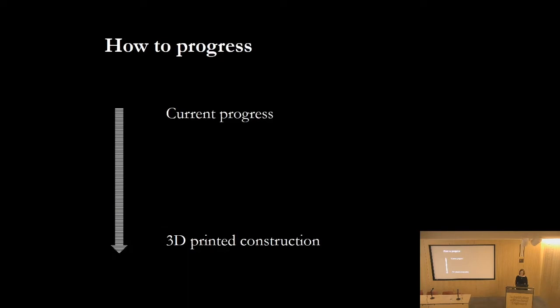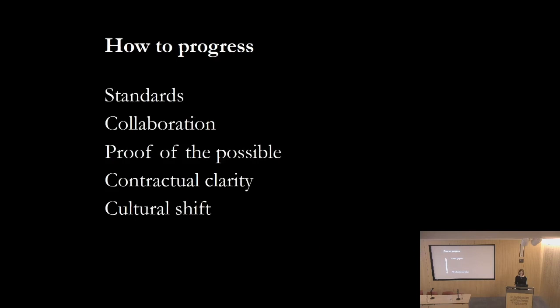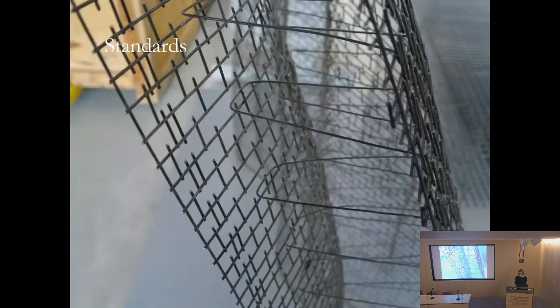We've seen the potential and where we are, and areas to reduce cost, increase speed, and produce beautiful unique designs. But how can we take this to actual 3D-printed construction? During my discussions with researchers, I found five main items: standards, collaboration with other people, proof that you can do it, clear contracts — because when the designer becomes the builder becomes the client you need clarity on responsibility — and finally, a cultural shift.